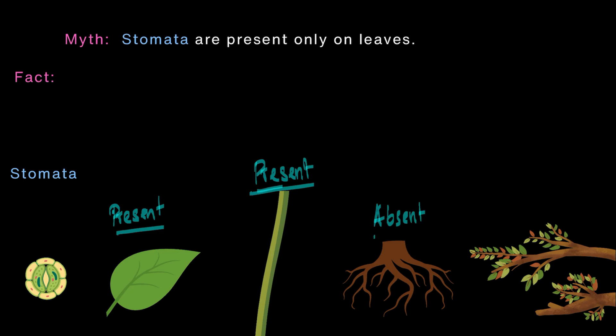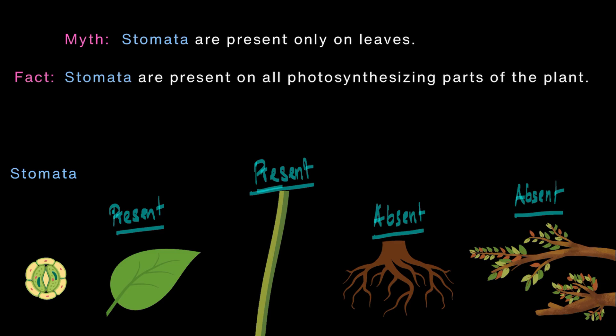So, stomata is absent in the roots and in the woody branches and stems as I mentioned, the epidermal layer is replaced by a layer of cork. Stomata is also absent here. No epidermis, no stomata. So, the fact is that stomata are present on all photosynthesizing parts of the plant.